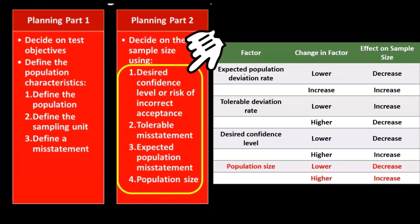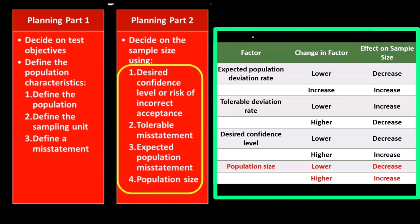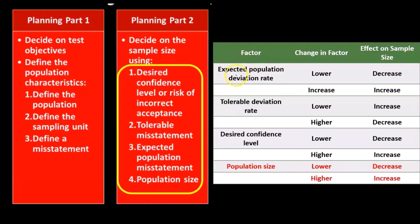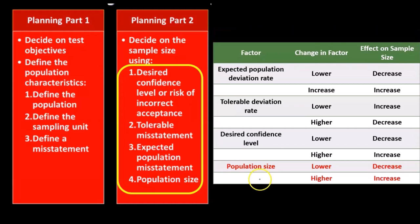Then we have decide on the sample size. We have the desired confidence level or risk of incorrect acceptance, the tolerable misstatement, the expected population misstatement, and the population size. We've seen this factor table in prior presentations when we applied statistical sampling to tests of control — a similar table showing the relationships of these items: the factors, the change in the factor, and the effect on sample size. The difference in this table is going to be the item in red. Note that we are considering the sample size in relation to the population.